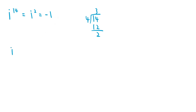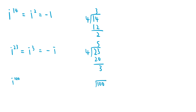How about i to the power of 23? If we divide 23 by 4, we end up with a remainder of 3, so i to the power of 23 equals i cubed, which equals negative i. What about i to the power of 100? Dividing 100 by 4 gives a remainder of 0, which means 100 is a multiple of 4. So i to the power of 100 equals i to the power of 0, which equals 1. Whenever the exponent is a multiple of 4, i raised to that exponent always has a value of 1.